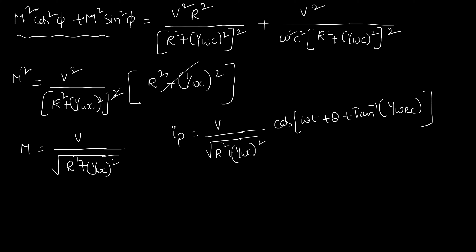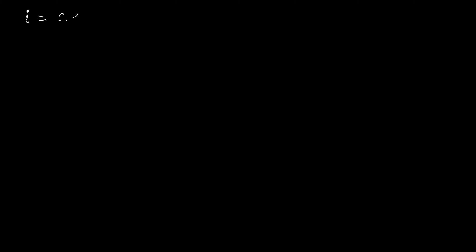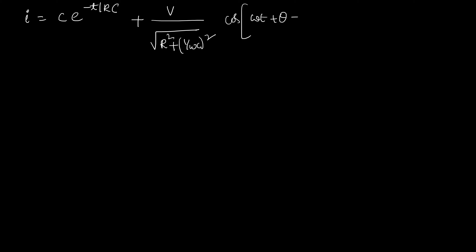We already discussed that the complete solution for the current I is the complementary function plus the particular solution. We already have the relations for I_C and I_P. So the complete solution is: I = C·e^(−t/RC) + [V/√(R² + 1/(ωC)²)] cos(ωt + θ + tan⁻¹(1/(ωRC))). This is our complete solution, but C is still unknown.